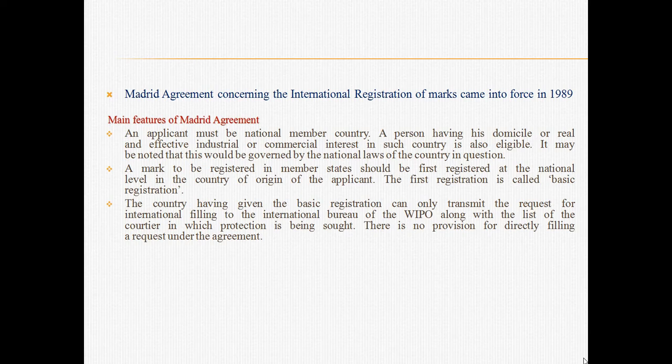The country having given the basic registration can only transmit the request for international filing to the international bureau of WIPO, along with the list of the countries in which protection is being sought. There is no provision for directly filing a request under the agreement.